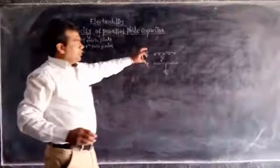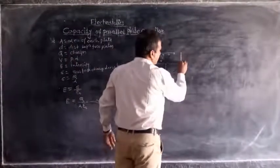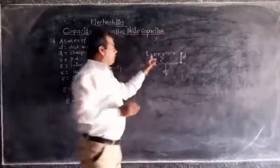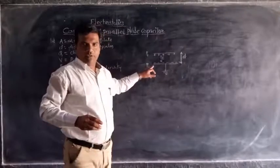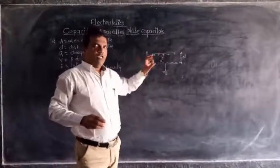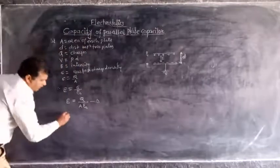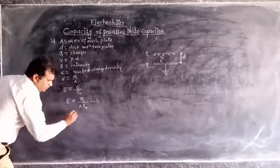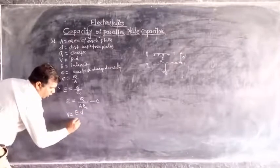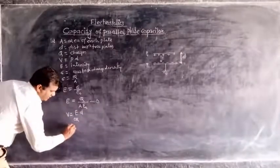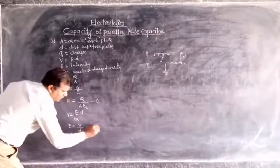These two plates are separated by distance d. Plate P1 has positive charge Q and plate P2 has negative charge Q. Therefore, there is a potential difference between the two plates. The potential difference between P1 and P2 is equal to E times d. Or we can write, electric intensity E equals V by d. This is equation number 2.